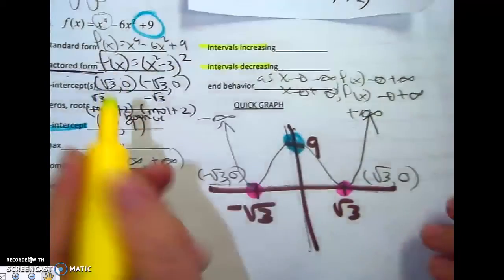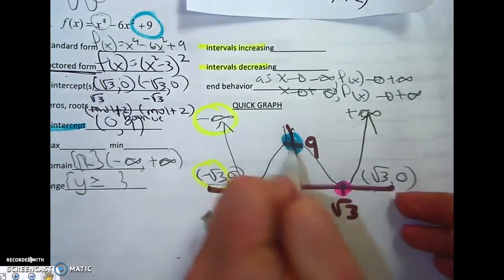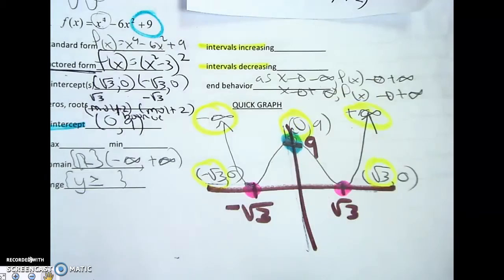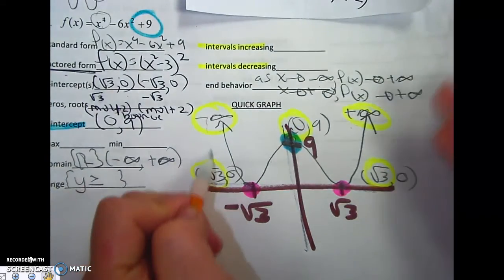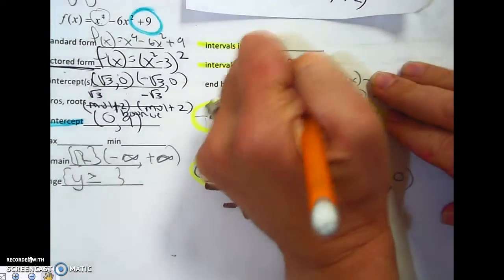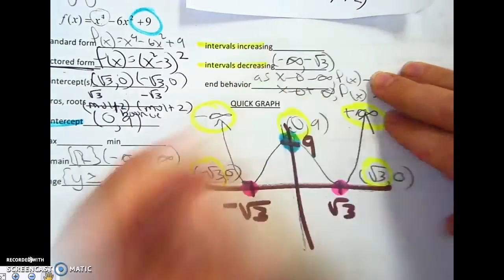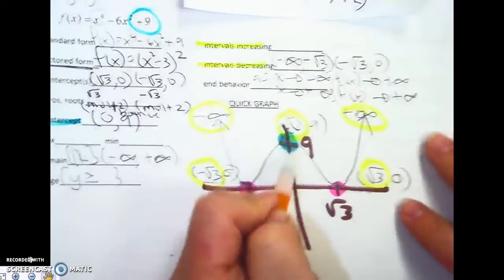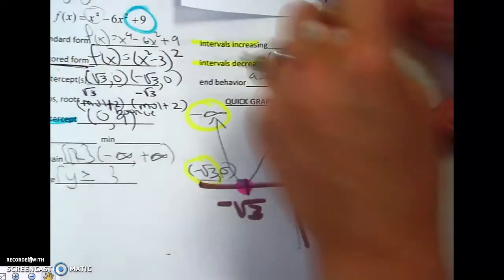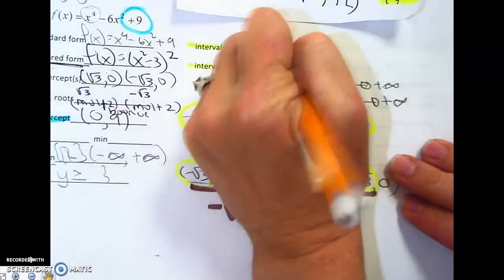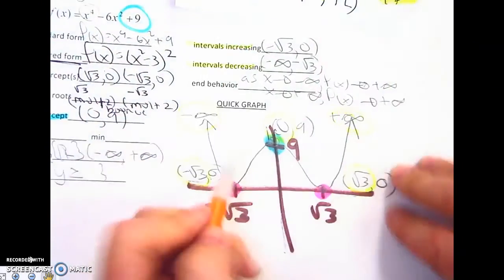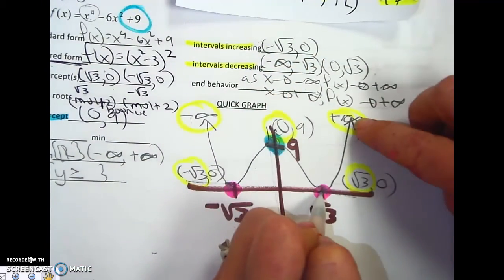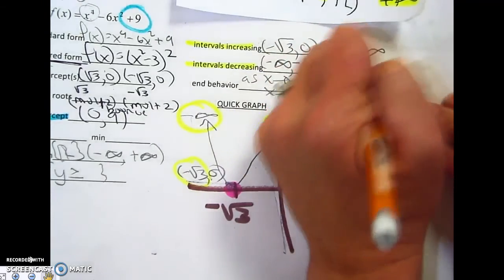So that when I do my intervals increasing and decreasing, I'm going to focus on all the x values. So from here to here, it's going down, negative infinity, comma, negative rad 3. From here to here, it's going up, negative rad 3, comma, 0. From here to here, it's going down, 0, comma, rad 3. And then from here to here, it's going up, rad 3, comma, positive infinity.